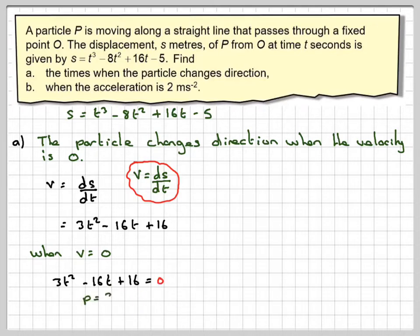We can factorize that. The product will be 3 times 16 which is 48t and the sum is minus 16t. We want two numbers. When we multiply them together, we get 48t and add the same two numbers, we get minus 16t. With a bit of trial and improvement, you'll come up with minus 12t and minus 4t. Minus 12t times minus 4t makes 48t. Minus 12t plus minus 4t makes minus 16t.